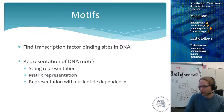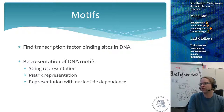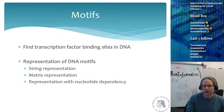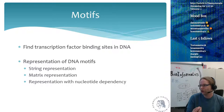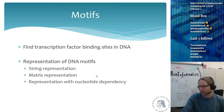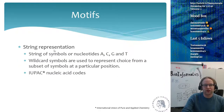Motifs are a way for a computer to find things like transcription factor binding sites in the DNA. There are different representations of DNA motifs: the string representation, the matrix representation, and a representation with nucleotide dependency. The third one is the best but also the most complex to implement, so not many tools use nucleotide dependency representation.